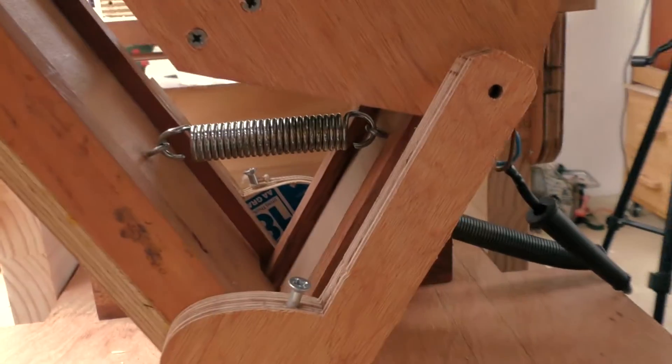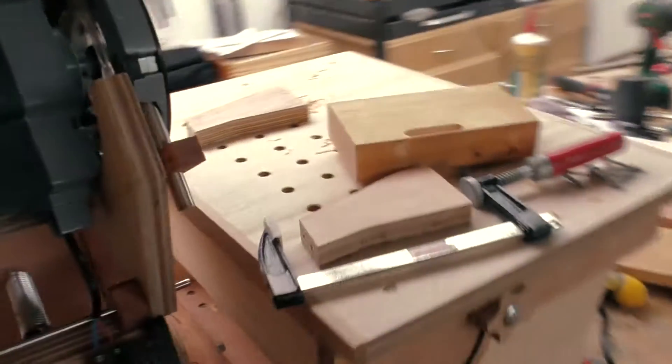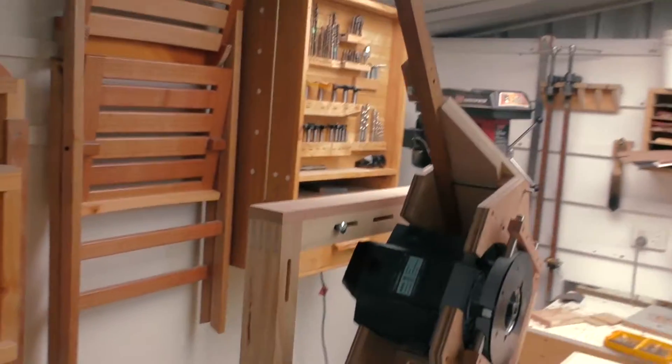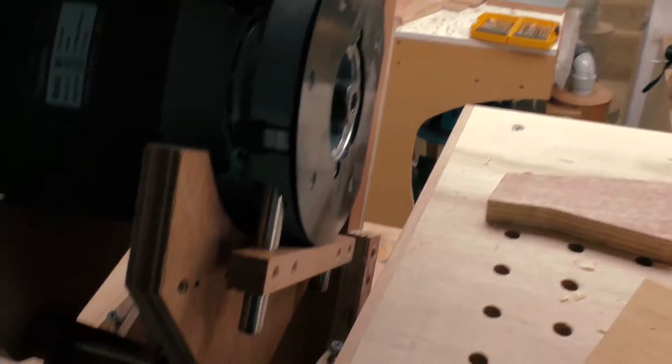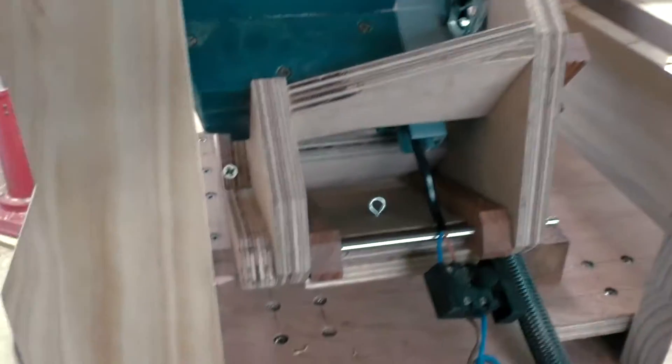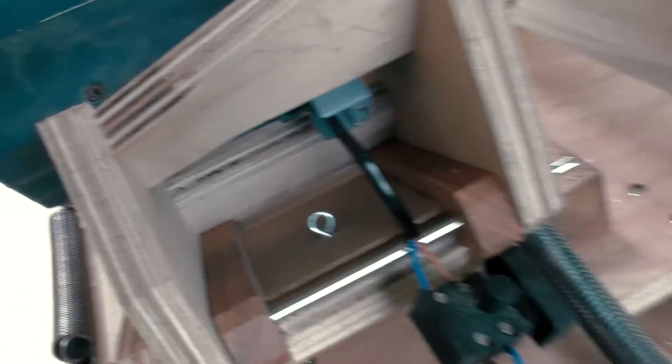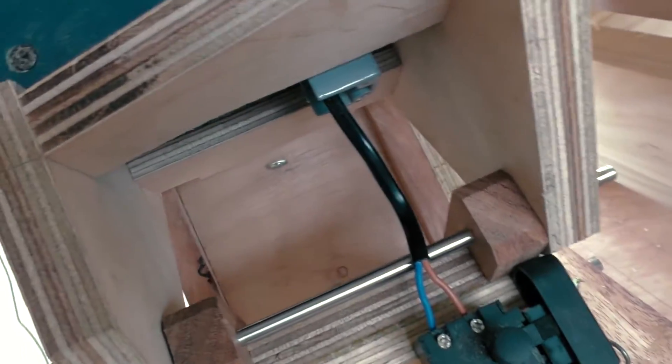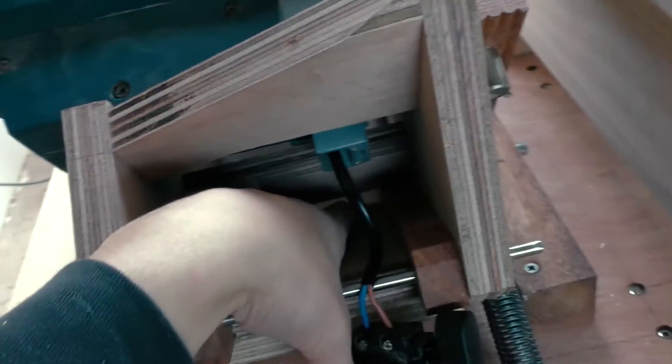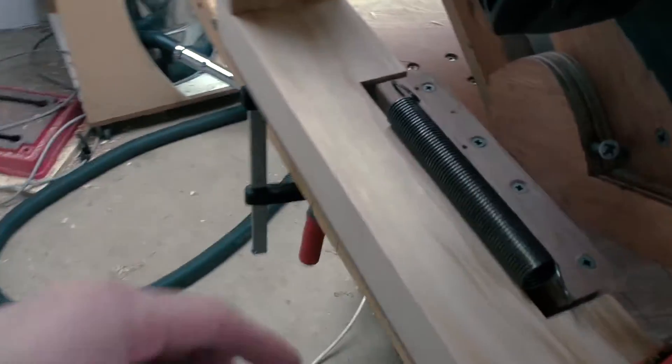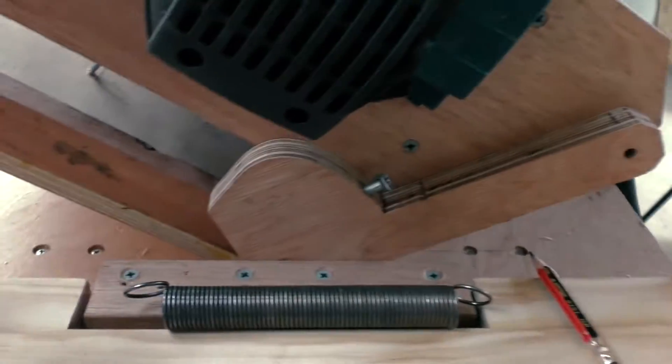Well, this spring is just way too strong. Let's just look at this - I cannot force it down no matter what. Apart from having the spring being way too strong, the pathway of the spring actually gets cut off once I put it all the way down, as you can see here. So instead, I'm going to mount a weaker spring from here to here.